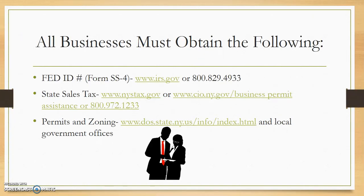All businesses must obtain the following: your Federal ID number, otherwise known as your EIN. The form is SS-4. The website is www.irs.gov, or you can call 800-829-4933. You must also obtain your state sales tax form. The website is www.tax.ny.gov or www.esd.ny.gov, as well as calling 1-800-972-1233.